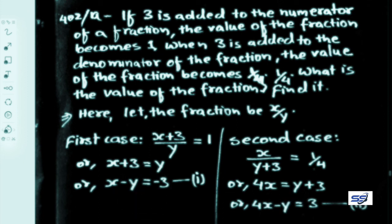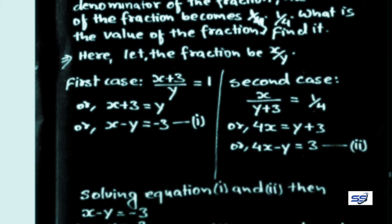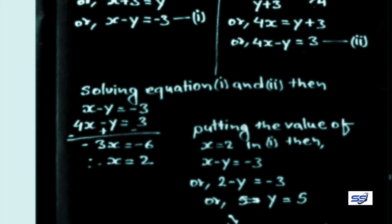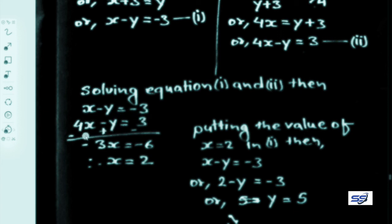Solving equations 1 and 2: equation 1 is x minus y equals minus 3 and equation 2 is 4x minus y equals 3. Subtracting equation 1 from equation 2 (changing signs of equation 2): minus y terms cancel. We get minus 3x equals minus 6, therefore x equals 2.